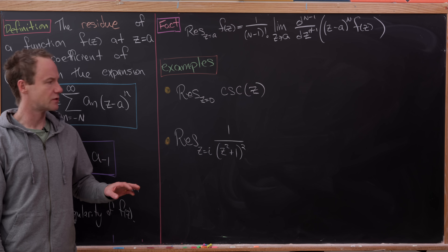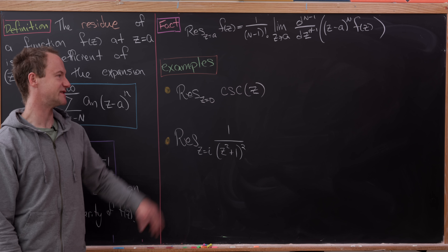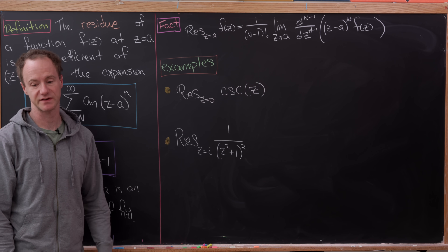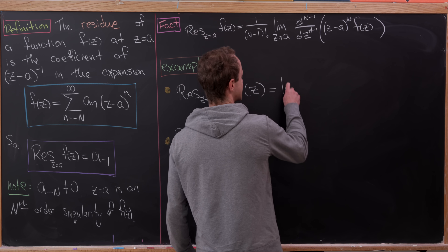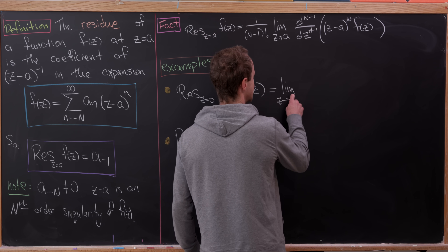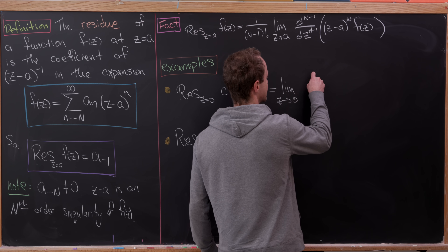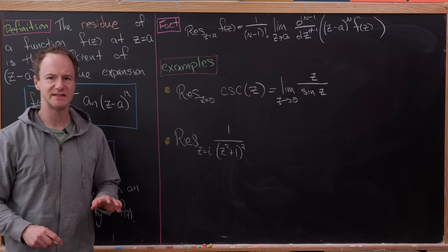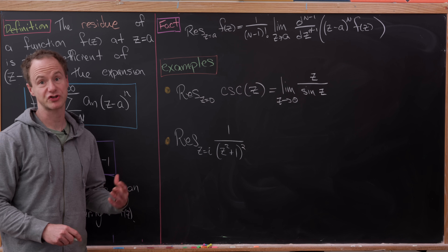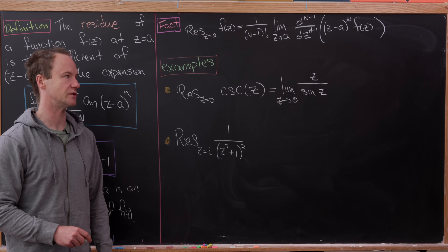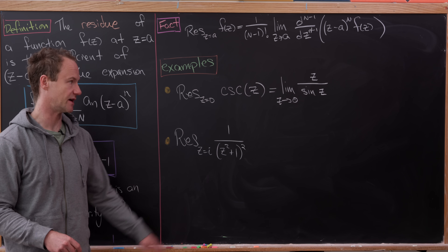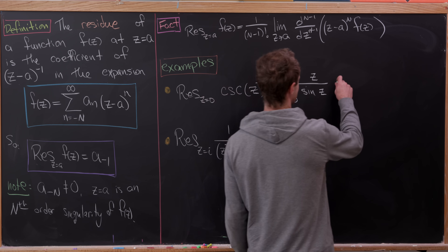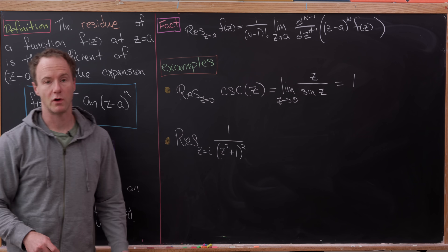Let's do a couple of examples. The residue at z equals zero of cosecant — recall cosecant is one over sine — can be calculated as the limit as z goes to zero of z over sine of z, given that z equals zero is a first order singularity of cosecant. That's a well-known limit from first semester calculus, and it's equal to one.